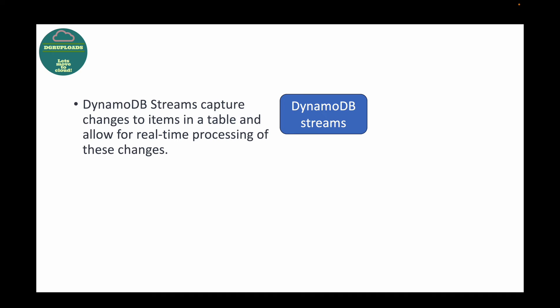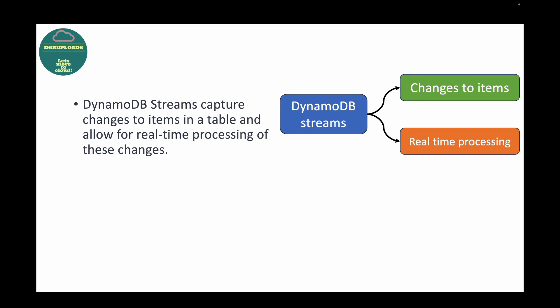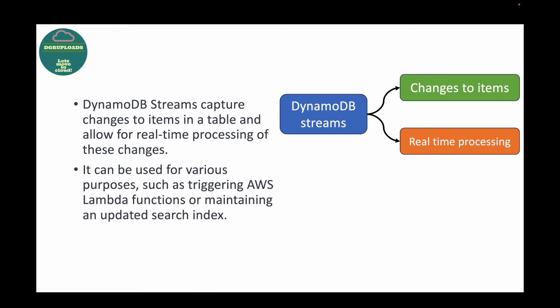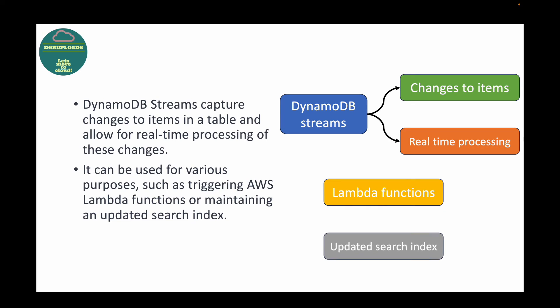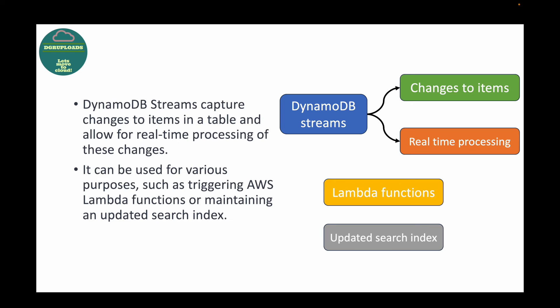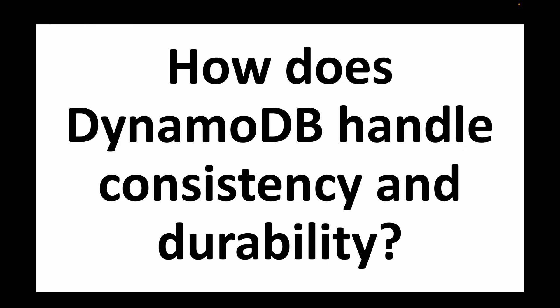The next question is: what is the purpose of DynamoDB Streams? DynamoDB Streams can be used to capture changes being made to items in your table and allow real-time processing of those changes. This can be used for various purposes such as triggering AWS Lambda functions or maintaining an updated search index — whenever data changes you want that updated in real time, you can use DynamoDB Streams for that.